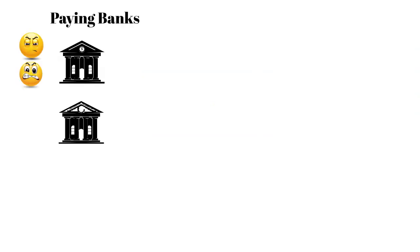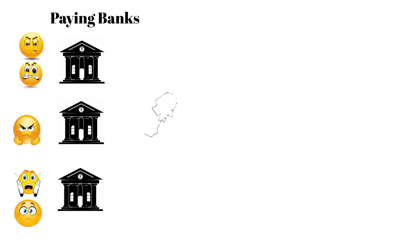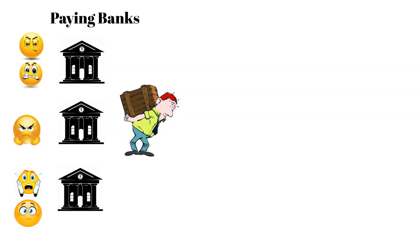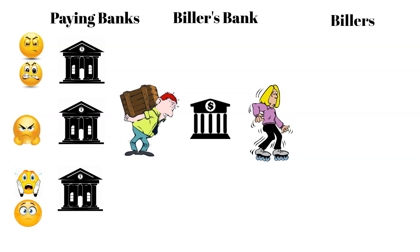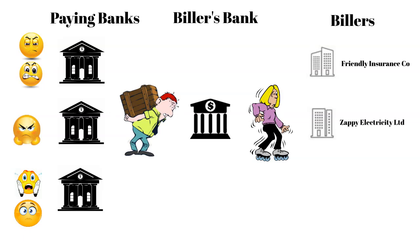Banks accumulate bill payments throughout the day and then consolidate them into a BPAY file for each recipient bank. When the biller's bank receives the files they consolidate the payments and then split them into new files per biller. The biller then gets a file containing their payments along with a single credit to their bank account. It's convenient for billers as they don't have to reconcile individual transactions and can load the BPAY file to their accounts receivable system for processing.